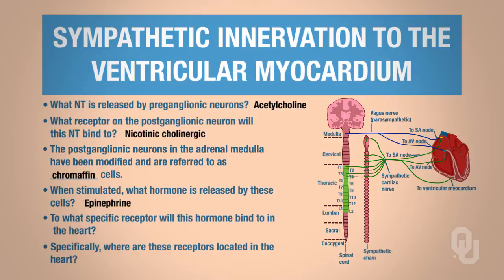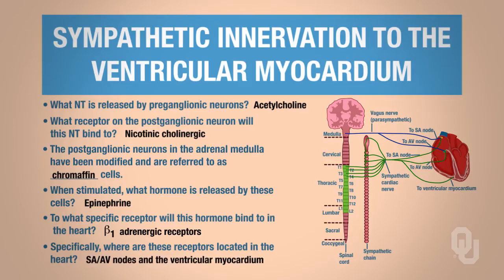Epinephrine then will bind to beta-1 adrenergic receptors in the heart. These receptors are located in the SA and AV nodes in the heart, as well as the ventricular myocardium. When we talk about sympathetic innervation, we have epinephrine released from the chromaffin cells, and there's also norepinephrine being released from the postganglionic fibers as well.